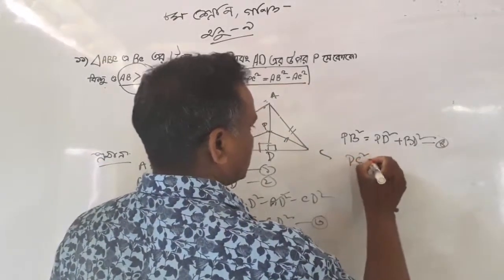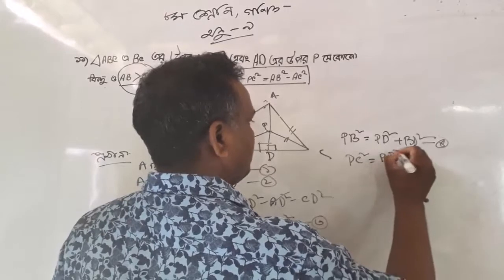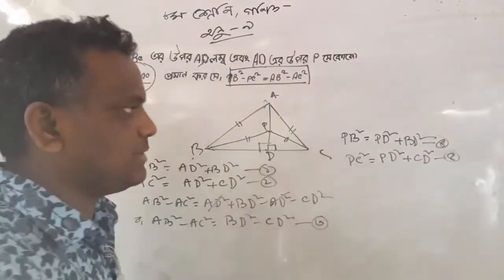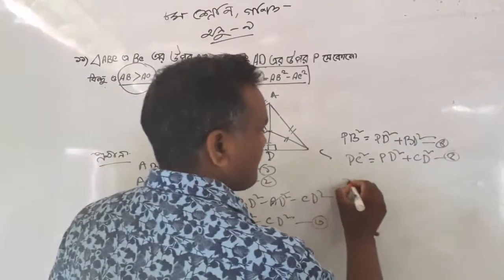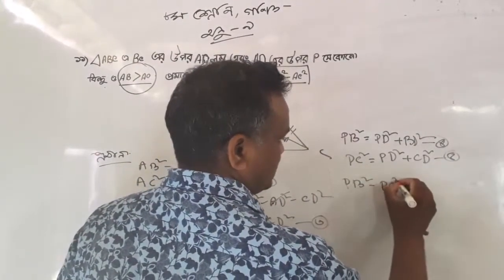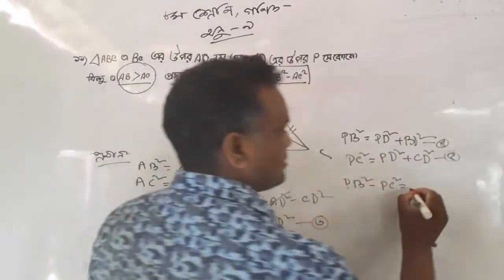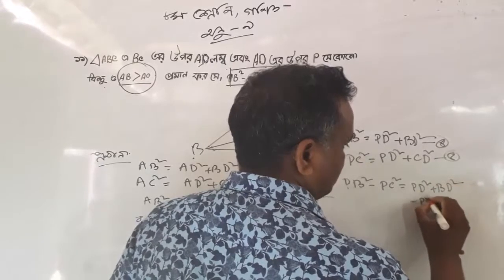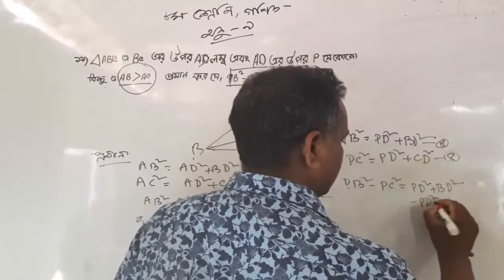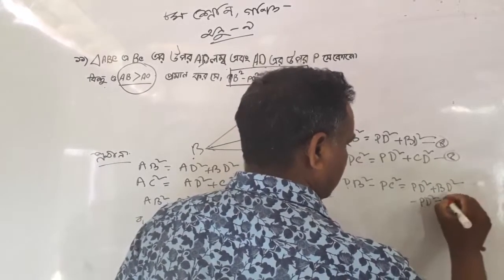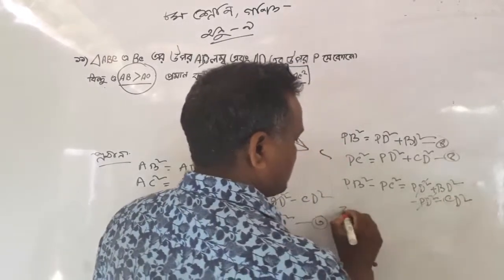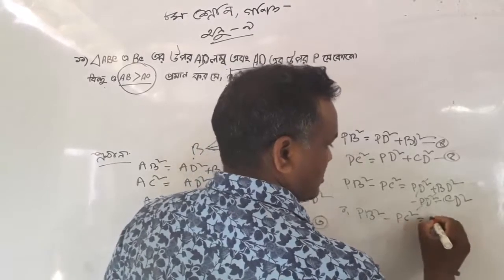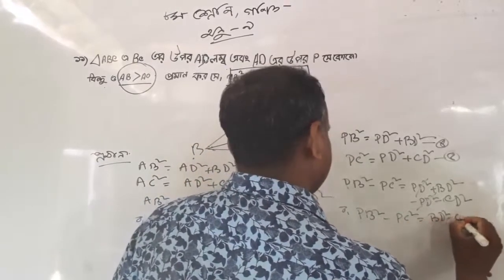It is P, D, F. How much is it? It is P, D, F. It is P, D, F, and I have a deal. How much is it? This is P, B, S, K. And V, R — first is P, D, F; P, D, F; and B, D, F; and C, D, F. CDS care, okay? This is cut. What is PB squared minus PC squared? BD squared minus CD squared.